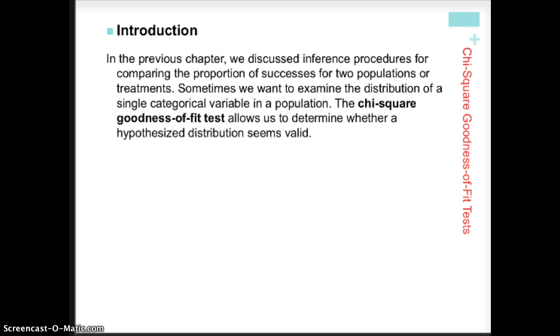Okay, so in the previous chapter, we discussed inference procedures for comparing proportions of successes for two populations or treatments. And sometimes we want to examine the distribution of a single categorical variable in a population. And chi-square lets us do that.